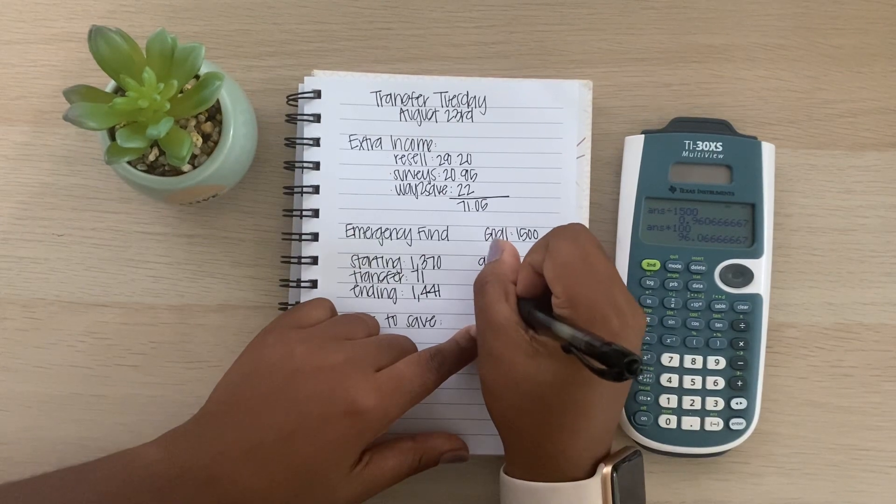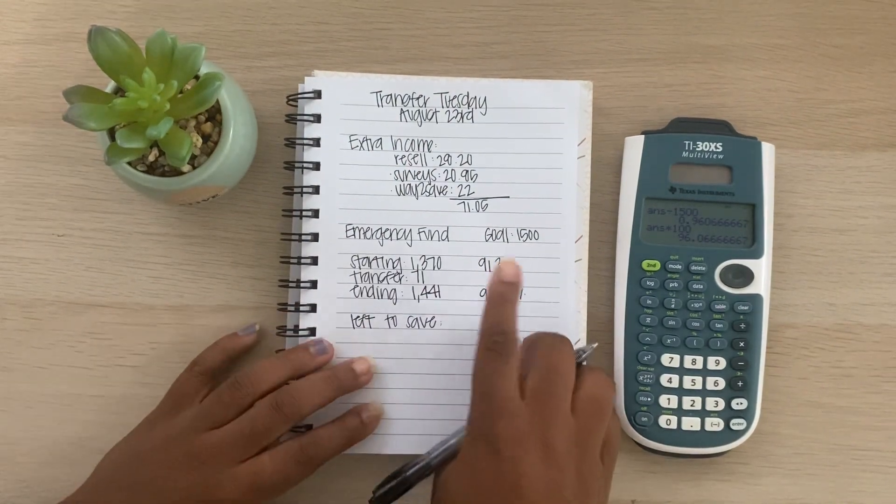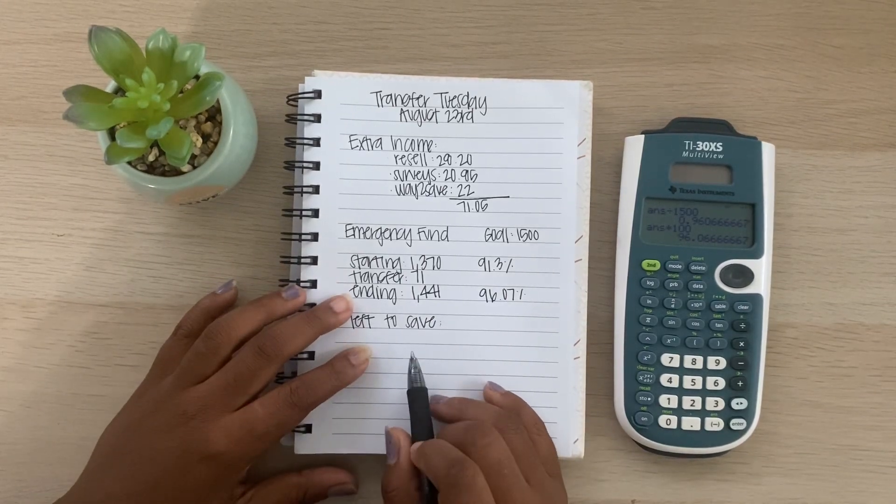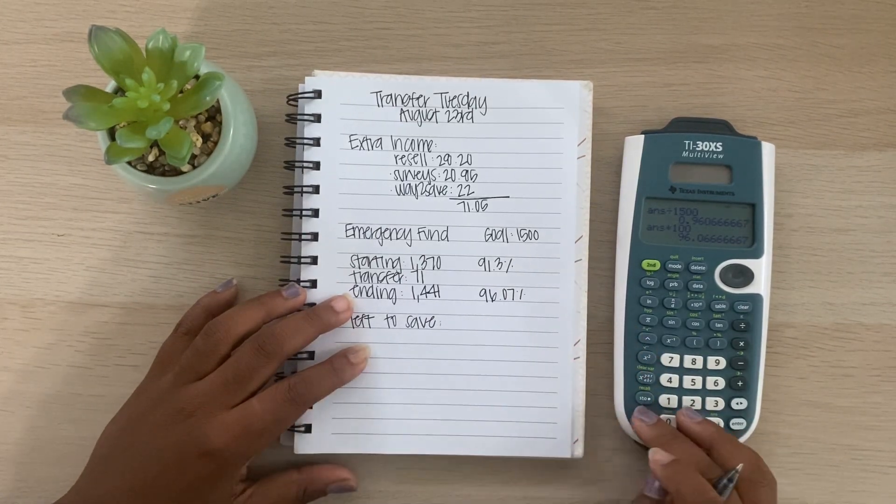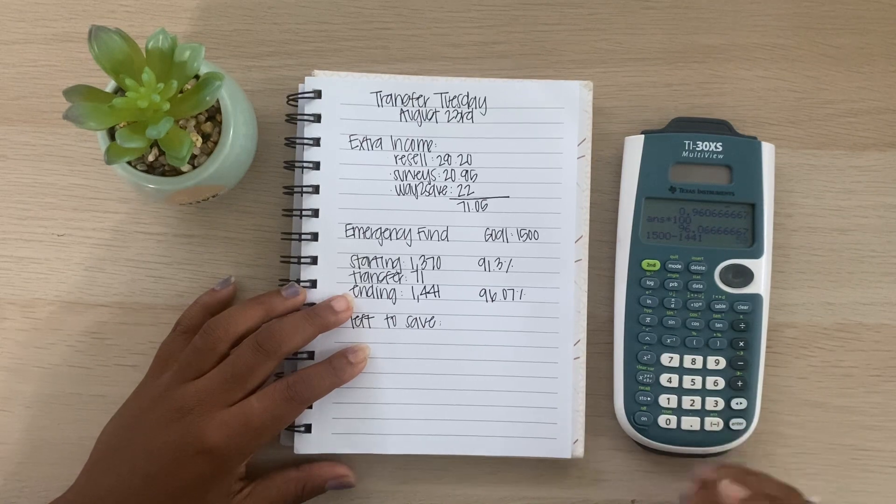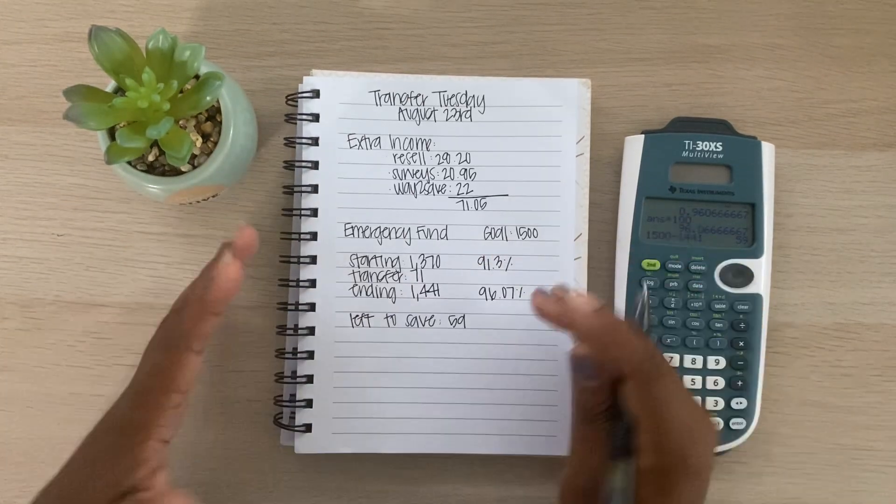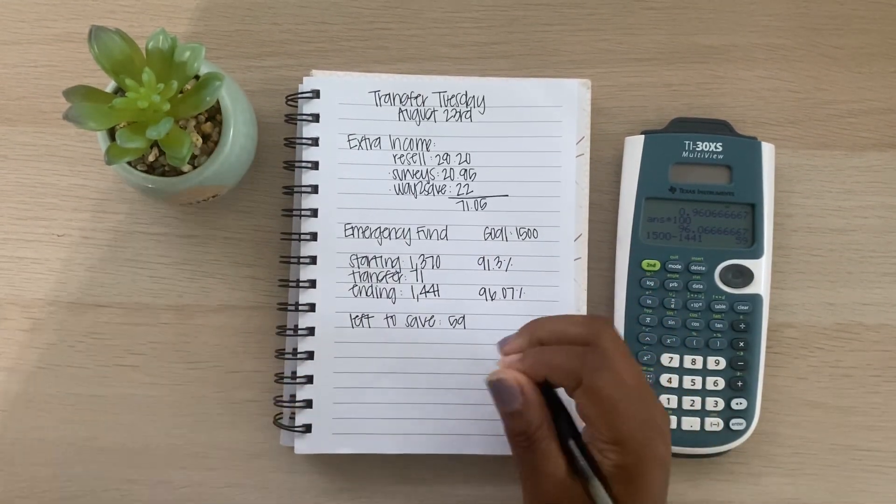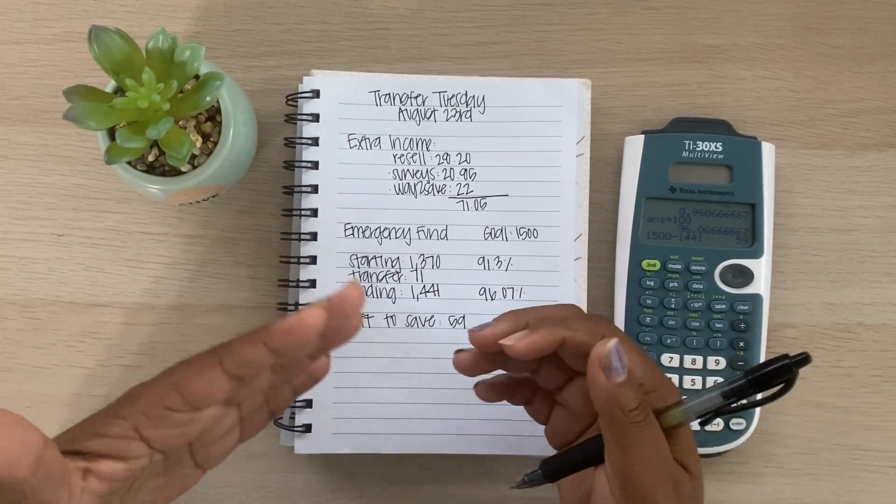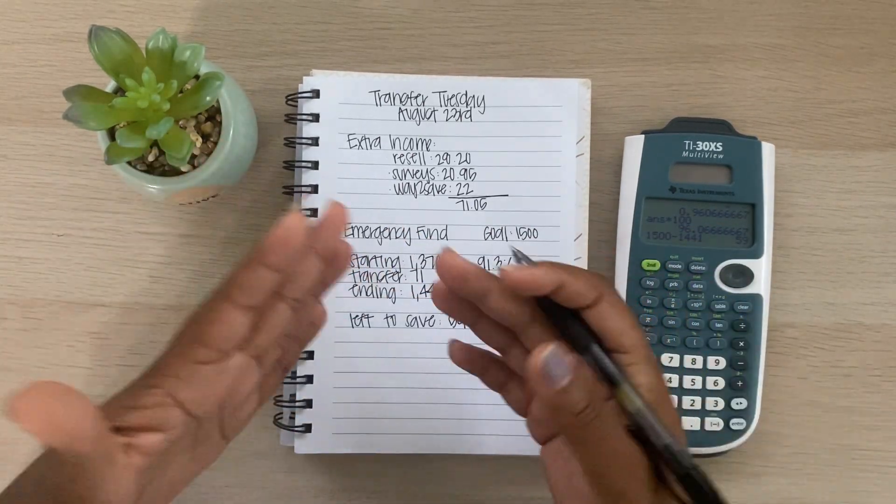So then our ending balance is going to be $1,441. So that then puts us up to 96.07%, so almost a little under like a 5% jump. So we still have some funds left to go to be able to reach my goal amount of that $1,500. So the amount that's going to be left to save is $59 y'all. And I do get paid this Friday. So my goal is to get about $10 doing another app that I have this week, and then hopefully I'll be able to take the rest of it from my paycheck because my goal was to have this fully funded by the end of August.